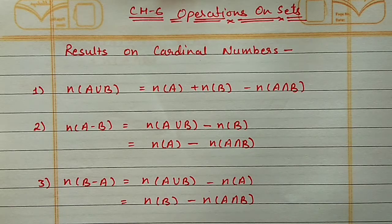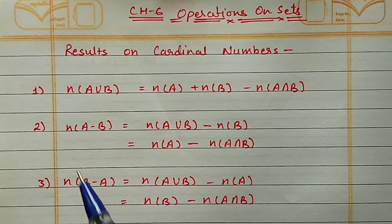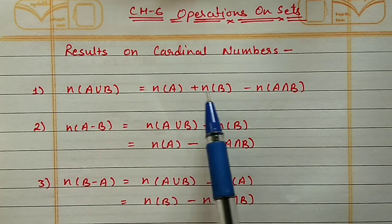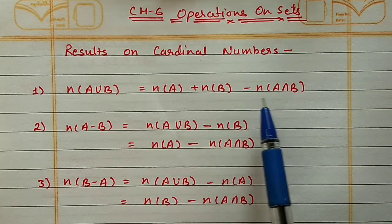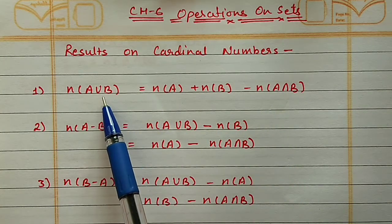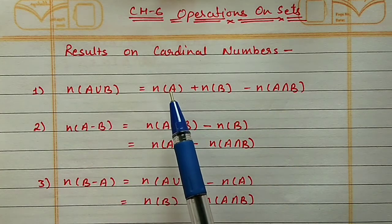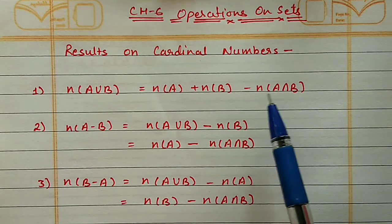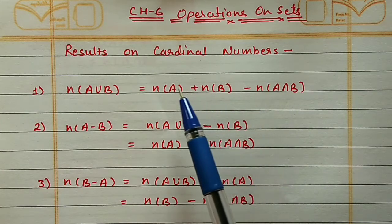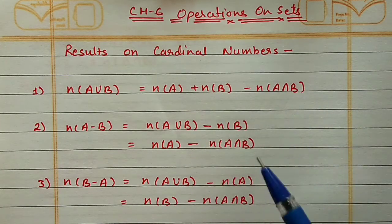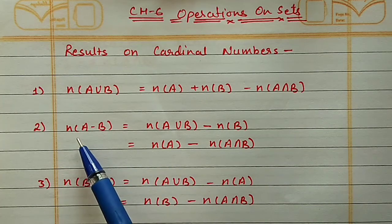Based on cardinal numbers we have a few results. The first result is N(A∪B) = N(A) + N(B) - N(A∩B). The elements in A∪B will be equal to the elements of A plus elements of B, and we subtract A∩B because the common elements come from both A side and B side, so we have to subtract them once.